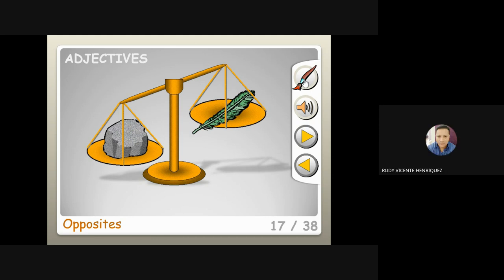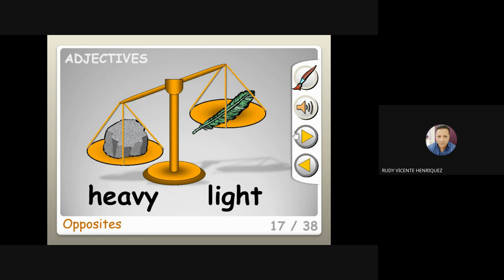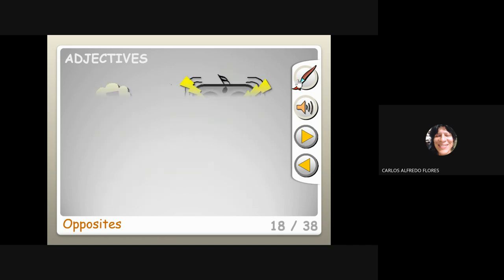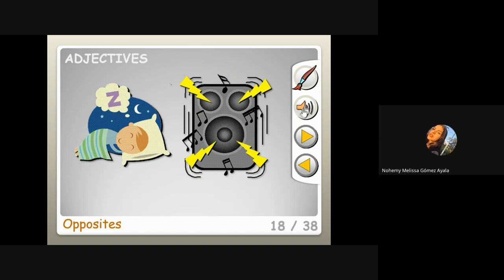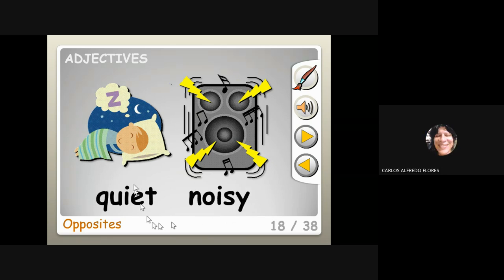Heavy — the opposite of heavy is light. Feathers are light; rocks are heavy. Adjectives — what is this? Quiet, silent, and the opposite is loud or noisy. Quiet and noisy.